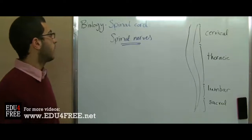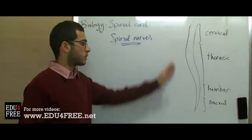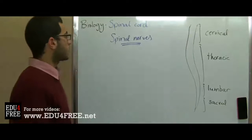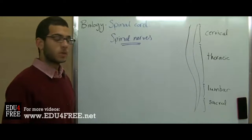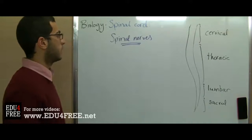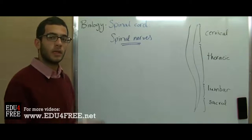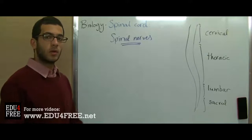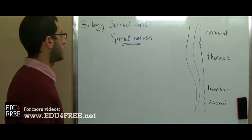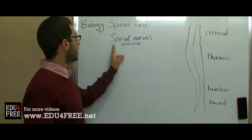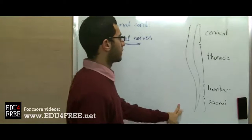There are 12 pairs of nerves that originate from the brain, and these are called cranial nerves, according to the cranium or skull where the brain is found. From the spinal cord, we have spinal nerves.